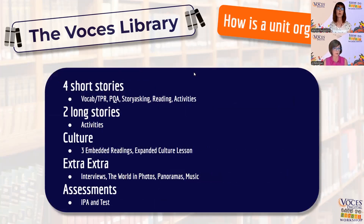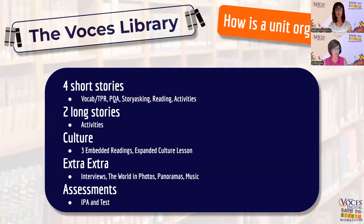A unit is organized starting with four short stories. Each short story starts with some vocab and TPR, moves into personal questions and answers or PQA, then story-asking, leading into reading and activities. After the short stories, you have two long stories with activities. You have a culture section consisting of three embedded readings and an expanded culture lesson. After that comes your Extra Extra section with interviews, the world in photos, panoramas, and music. And you have your assessments: an IPA and a test.